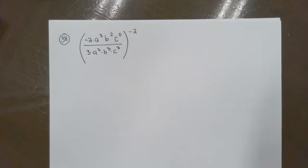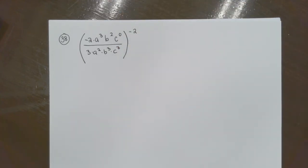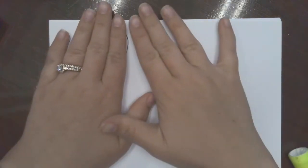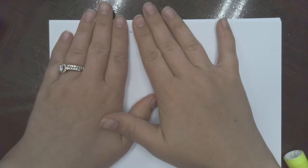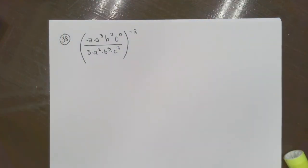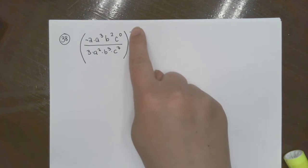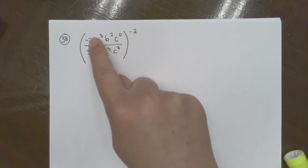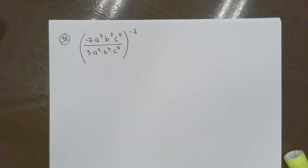The question always comes up: where do I start? Unfortunately, I have no better answer than it's your choice. If you wish to start inside and simplify inside, you can. If you wish to flip your fraction because of this negative, you can. If you wish to bring the entire exponent onto every single thing, you can.